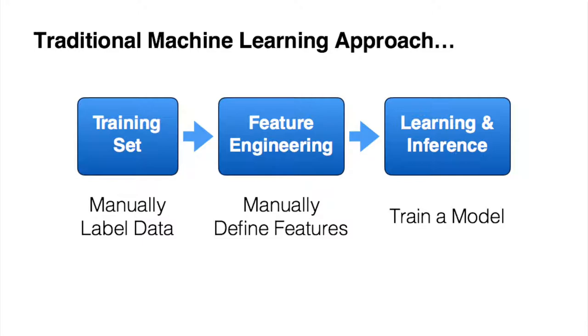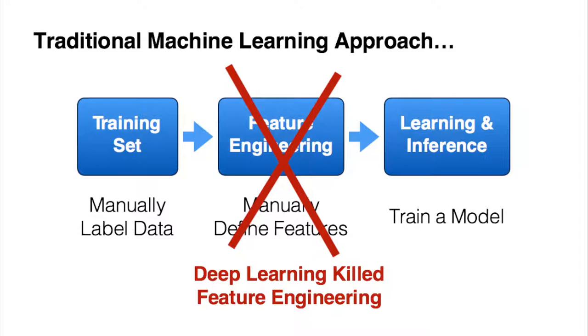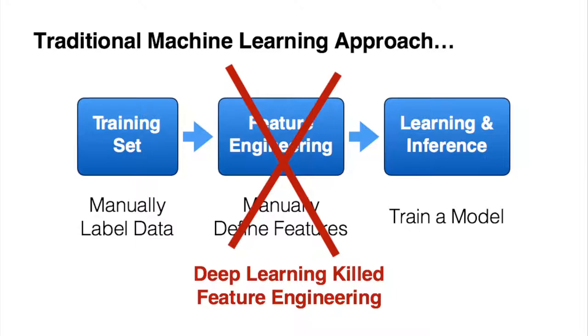So as Alex said earlier, the sort of conventional standard approach to this problem would be to say, Hey, I need to build my training set. So I'm going to through crowdsourcing or through domain experts pull people who track celebrity stuff and have them label a bunch of data for you. Then you would go and manually define a bunch of features. And then you would train some end model to extract this information. These are, again, non-trivial manual, non-trivial engineering efforts. And really, deep learning is largely, to some extent, removed the need to really think a lot about manual feature engineering. It's made that process considerably easier in some settings. But we still need to label a bunch of data. And what that looks like, again, is looking at sentences and just deciding, the first example is a true case, the second example is a negative case, and repeating this hundreds or thousands of times, depending on the complexity of your task.